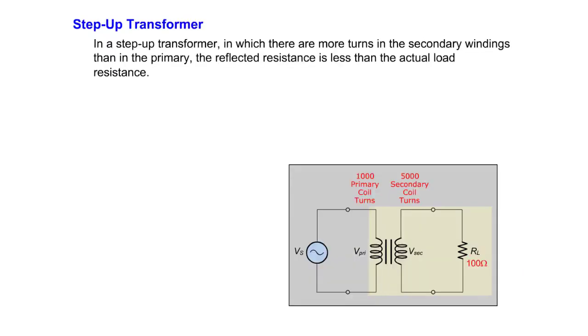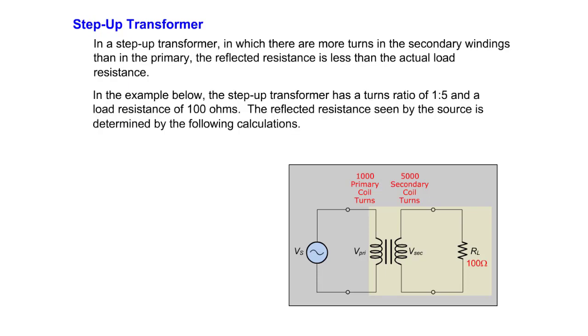In a step-up transformer in which there are more turns in the secondary windings than in the primary, the reflected resistance is less than the actual load resistance. In the example below, the step-up transformer has a turns ratio of 1 to 5 and a load resistance of 100 ohms. The reflected resistance seen by the source is determined by the following calculations.